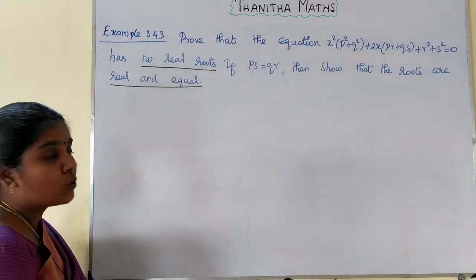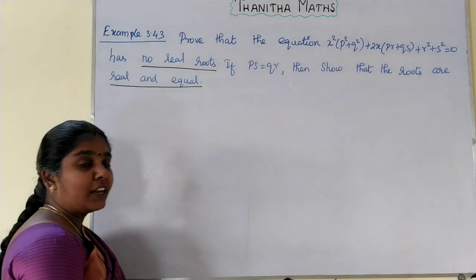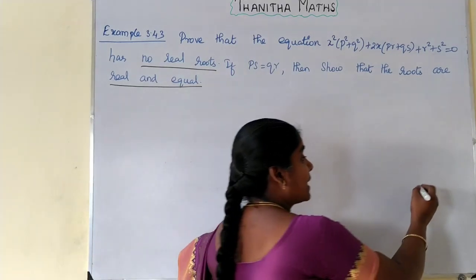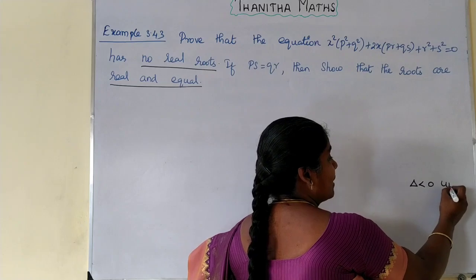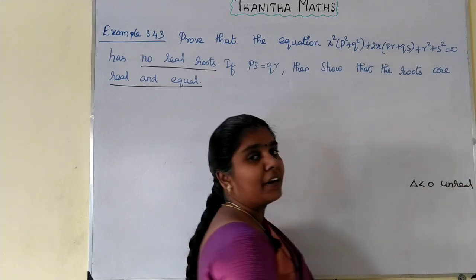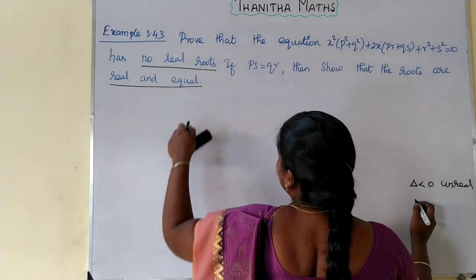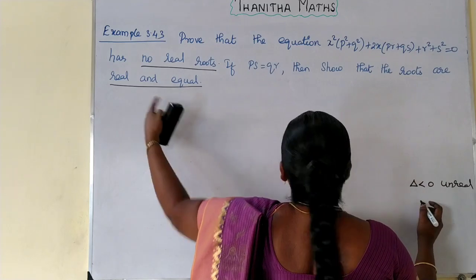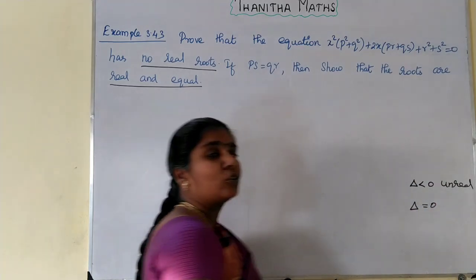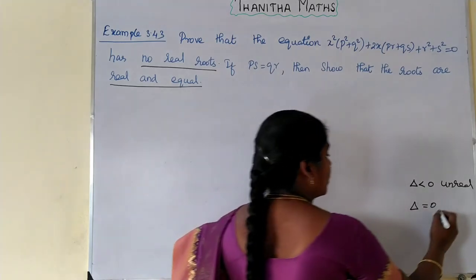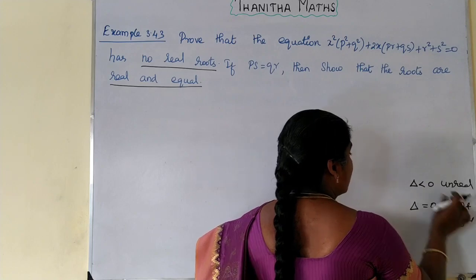First, what we need to prove is that the discriminant delta is less than 0. Delta less than 0 means unreal roots, and unreal means no real roots. If ps equals qr, we use that condition to show delta equals 0, which means real and equal roots.